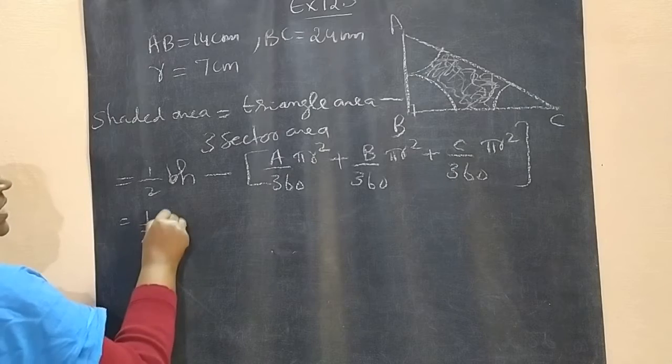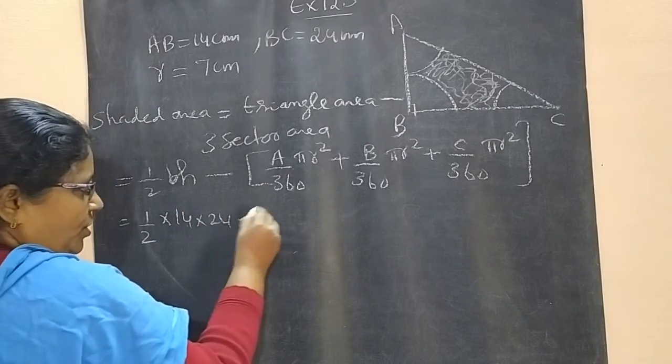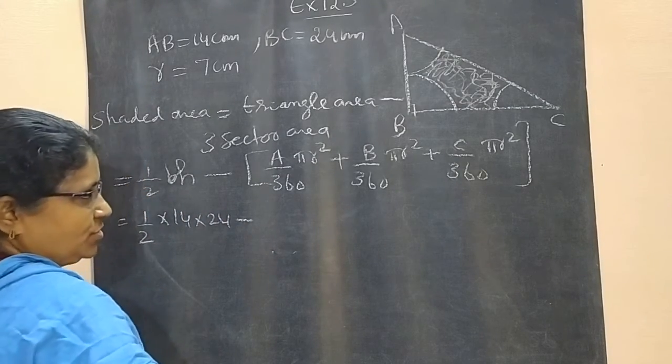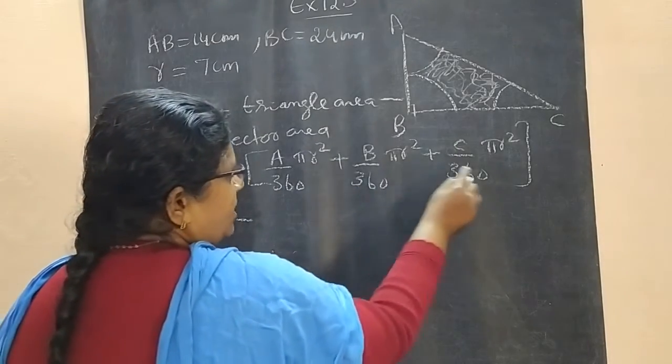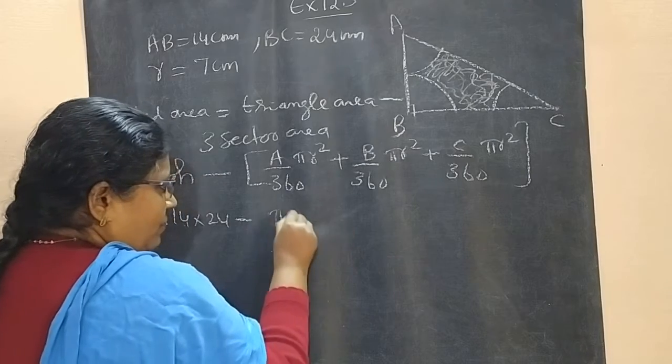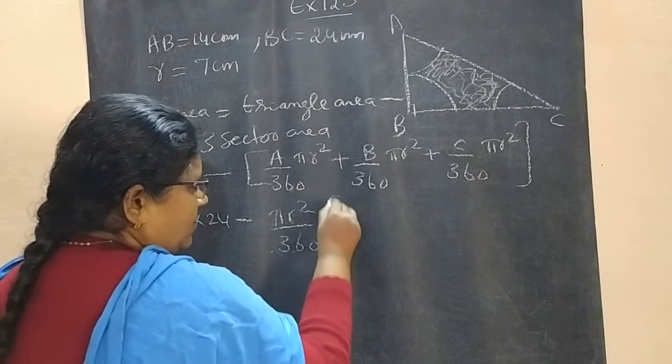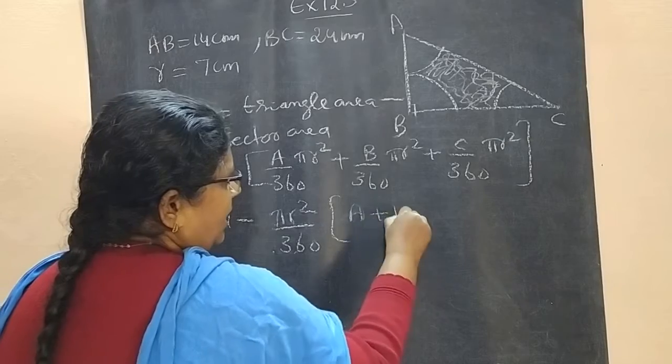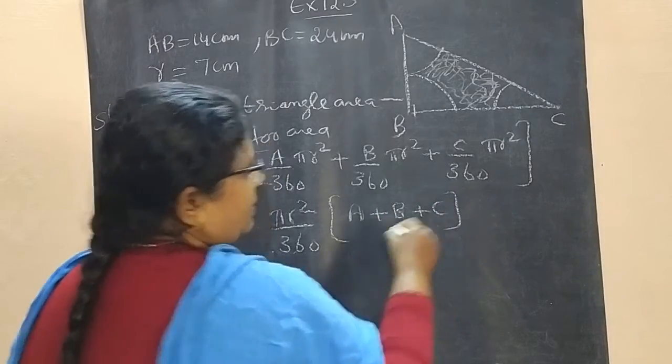Half into 14 into 24 minus. Now, just see, in all these three terms, pi r square and 360 common. So, we can take outside pi r square by 360. Now, what is remaining? A plus B plus C.